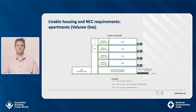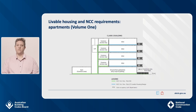G7D2 requires that all Class 2 sole occupancy units comply with Parts 2 to 6 of the liveable housing design standard, shown by the blue lines on the diagram. Part 1 of the standard — dwelling access — does not apply because Part D4 of NCC Volume 1 covers access to common areas in Class 2 buildings, as indicated by the green lines on this diagram.